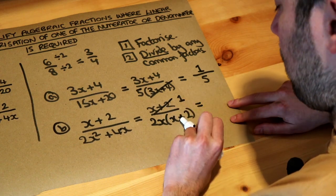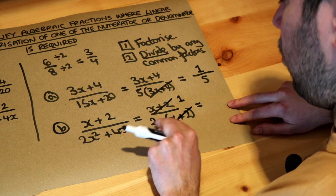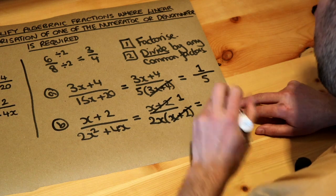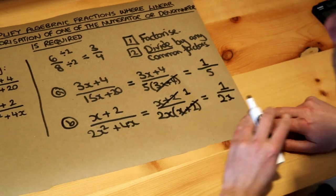Anything divided by itself is 1. And when I divide the bottom by x plus 2, you're just left with the 2x. So we're going to be left with that 1 at the top, and at the bottom we're just left with 2x. And that's the final answer.